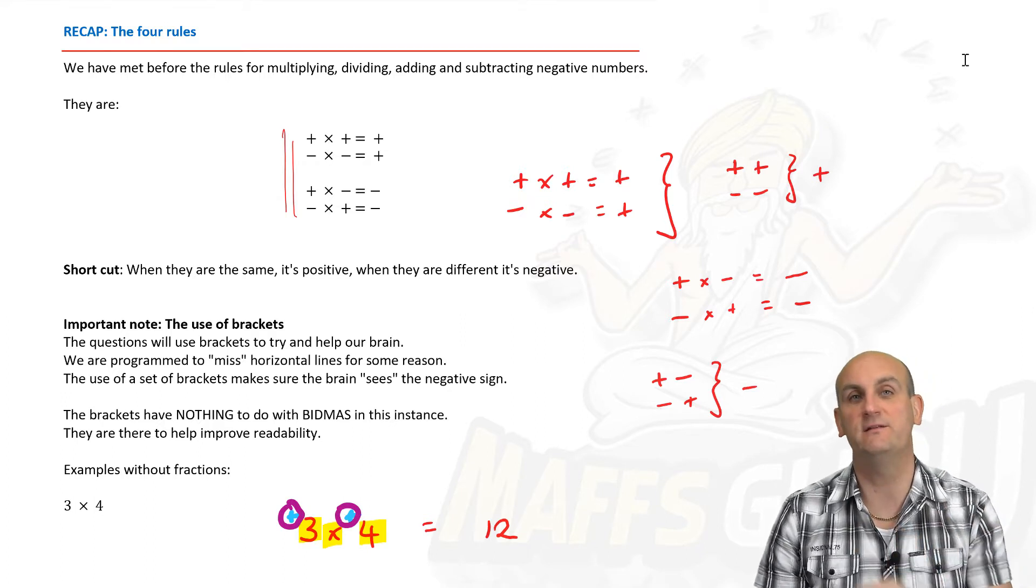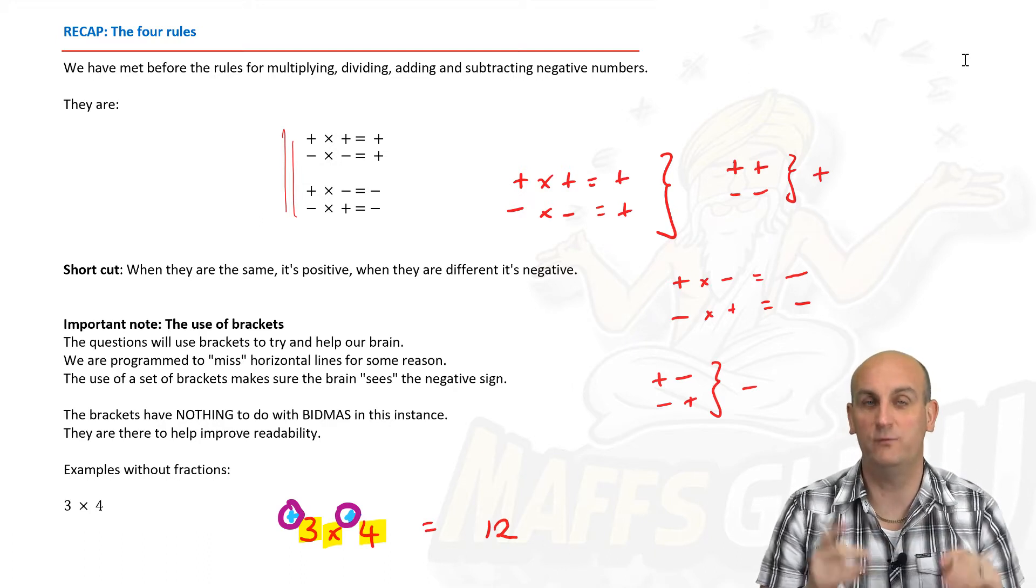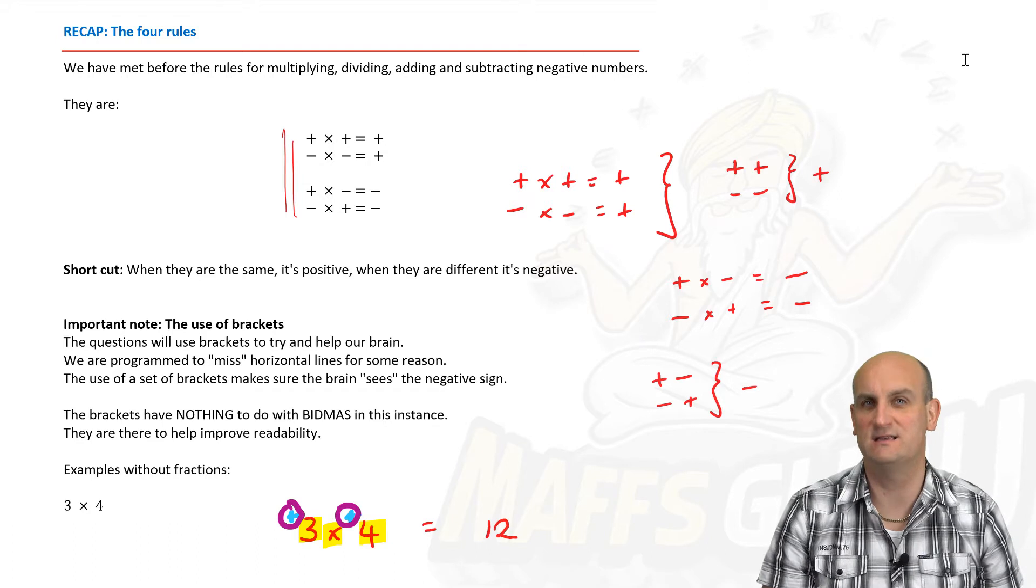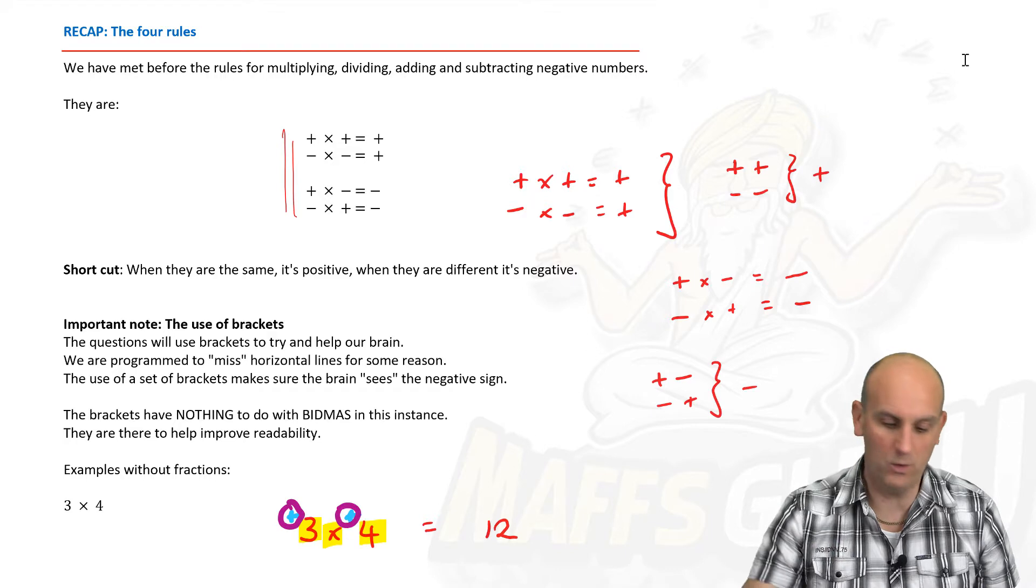If we do a positive and a negative, or a negative and a positive, because they are different, then they become one negative. We've done this previously in year seven or year eight, and so hopefully you guys are ready to make this work.